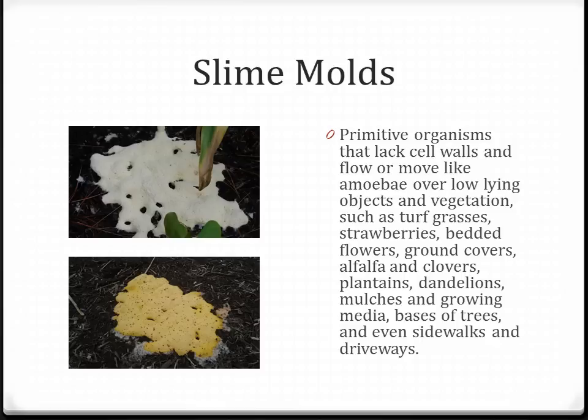Slime molds are a common occurrence, usually seen more commonly when new mulch has been laid down. This is a primitive organism that flows like an amoeba over vegetation. You can see it across new mulch, and also sliming its way across plant material, sidewalks, and driveways. It's very easy to control by just using a leaf rake to break it up. Slime molds can come in a number of different colors but all have that appearance of a pool of slime, though they actually have a somewhat dry, powdery nature to them.